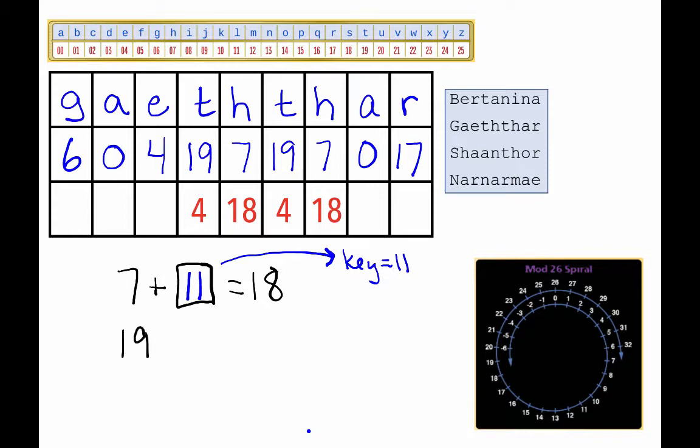We write 19 plus 11, and we get 30. Well, that's not 4, of course.